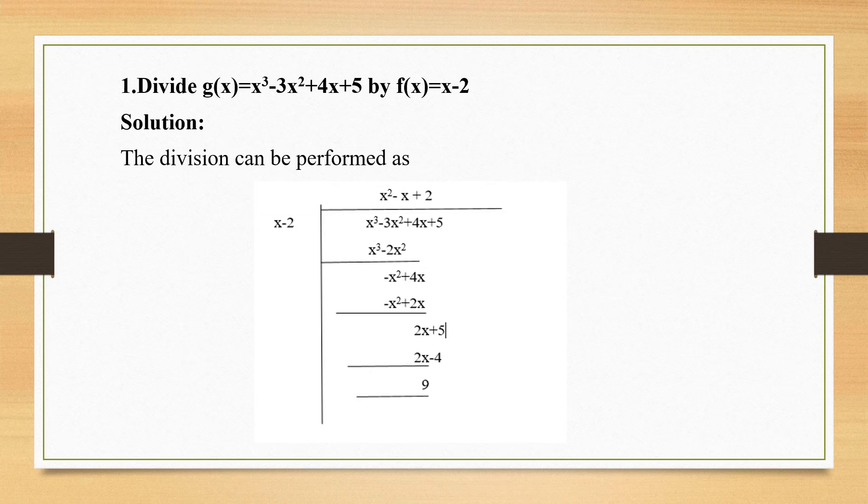Now let's have a problem for discussion. They have given you g(x) equals x cubed minus 3x squared plus 4x plus 5 by f(x) equals x minus 2. If they are saying by something, you substitute that value as your divisor.